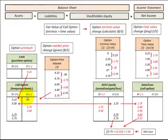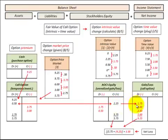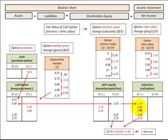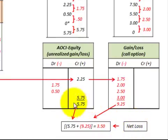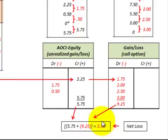Looking at the debit and credit balances: we had a $0.50 debit in the call option account, matched with a $2.25 credit in Other Comprehensive Income, with the balancing amount of $1.75 in the gain or loss account. All debits and credits between the call option account and OCI balance with the loss recognized on the income statement. Summing the unrealized gain and loss in OCI of $5.75 and adding the $9.25 loss recognized on the income statement, we arrive at a net loss of $3.50.